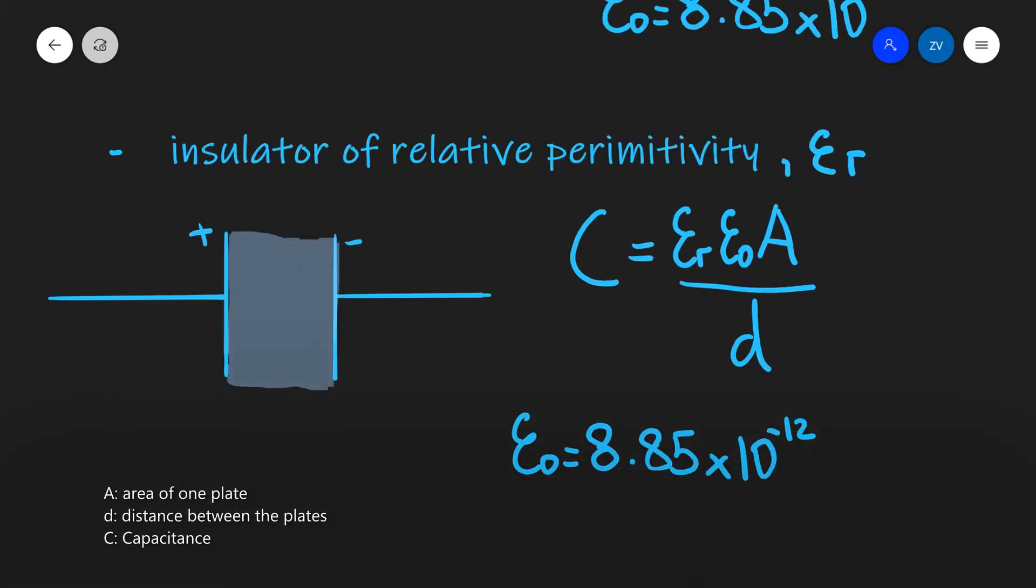We can make our capacitance increase by inserting an insulator between the plates. Let's say that this insulator will have a relative permittivity of Er. We can modify our equation to include this.